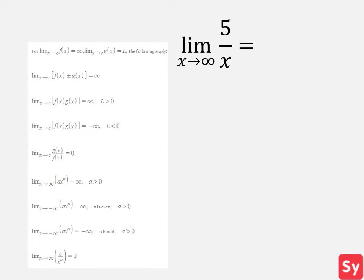Here's our first example. We have the limit of 5 over x as x approaches infinity. We'll look at the properties list first. We can see one property we can use. This shows that the limit is zero.